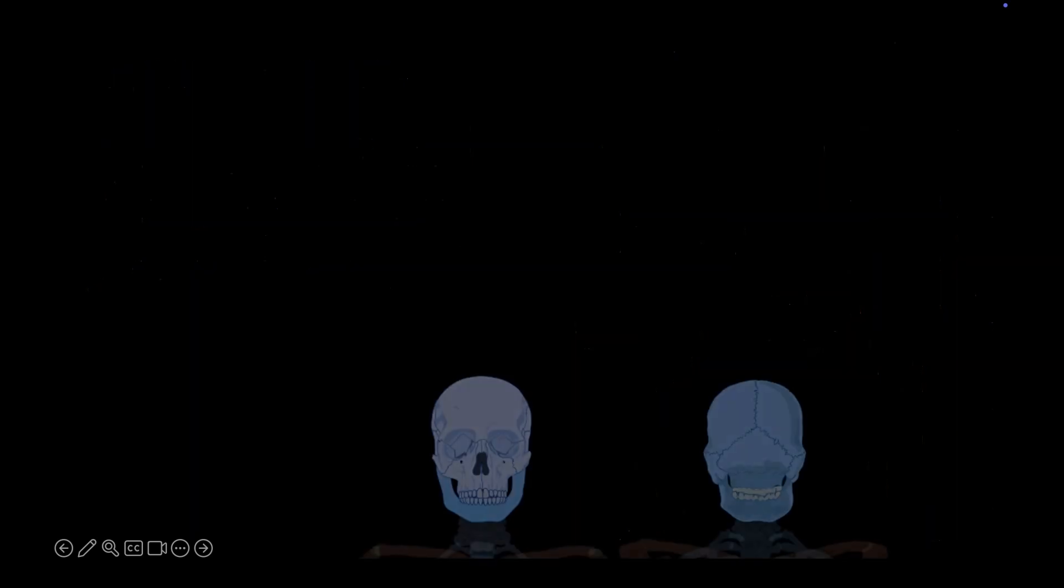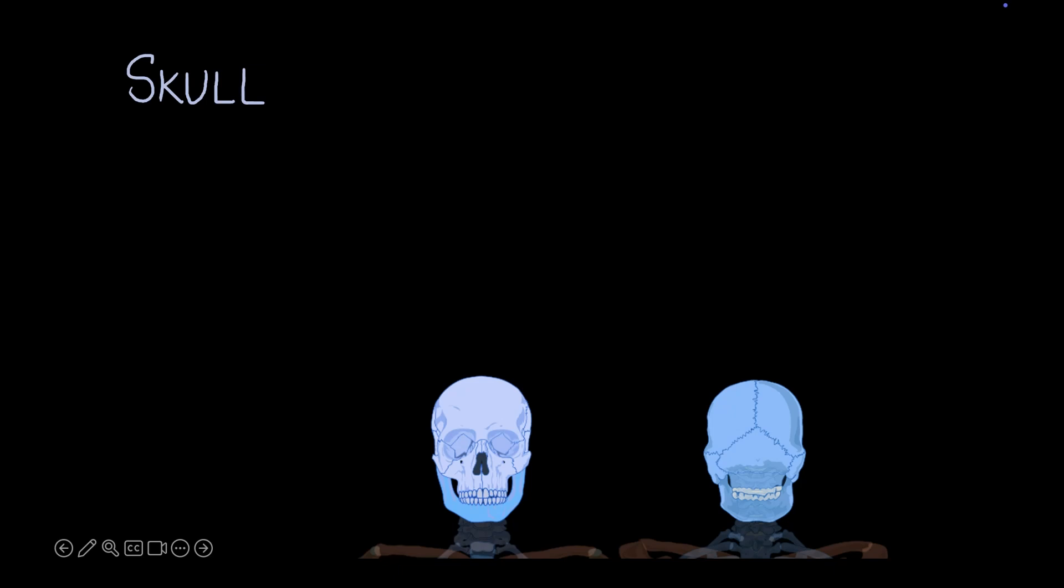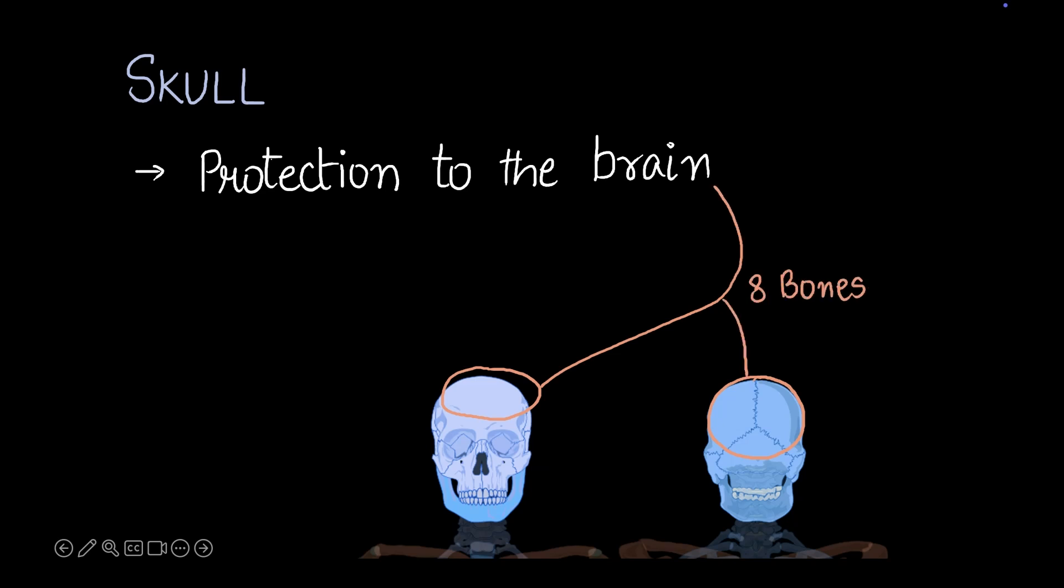Let's start with the skull. The skull's primary purpose is to protect the brain. We have these bones to protect the brain from any damage. There are precisely eight bones that do this job, and they are called the cranium.